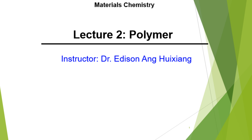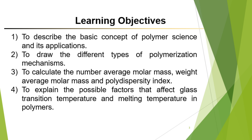Now let's move on to the next lecture: Polymer. The objective of this lecture is to describe the basic concept of polymer and its application, draw the different types of polymer mechanism, calculate the number average molar mass, weight average molar mass, and polydispersity index, and lastly to explain the possible factors that affect glass transition temperature and melting temperature in polymers.